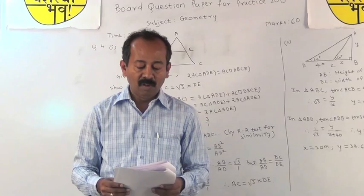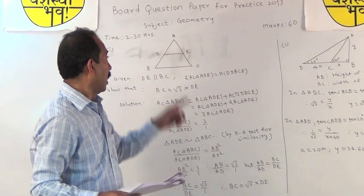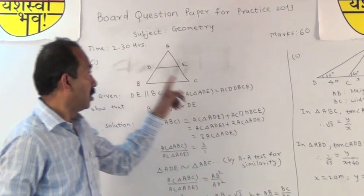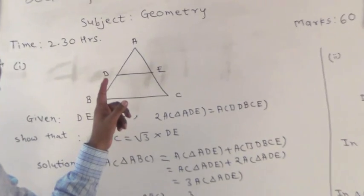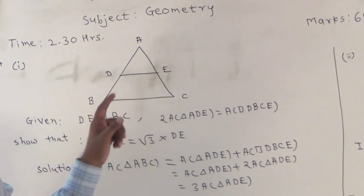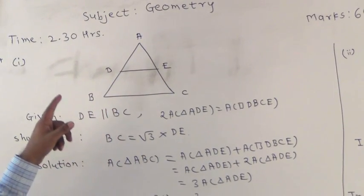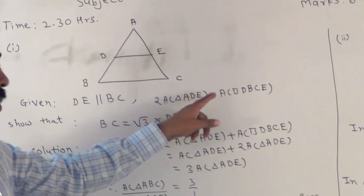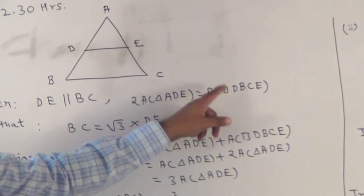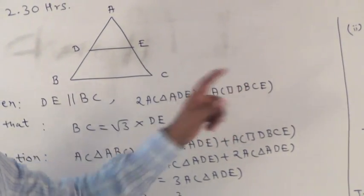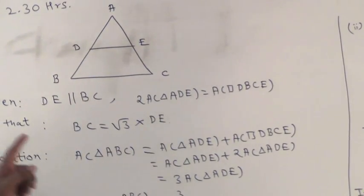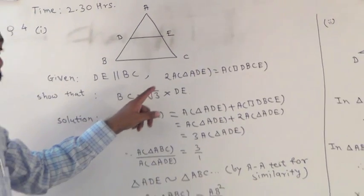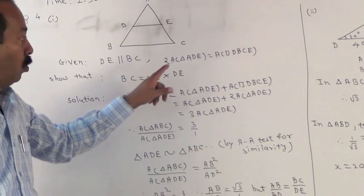The first example is: in triangle ABC, side DE is parallel to side BC, and twice the area of triangle ADE is equal to the area of quadrilateral DBCE. We have to show that BC is equal to √3 into DE.